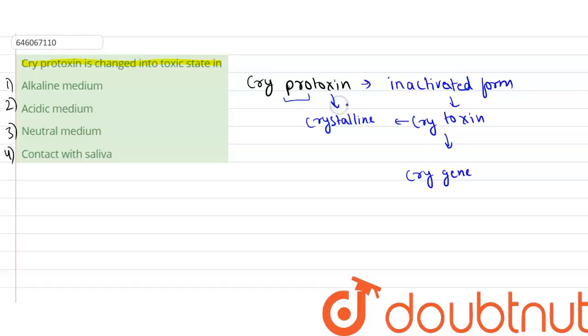Cry protoxin is a crystalline toxin. Whenever this crystal dissolves, it is converted into an active form. When the crystal of protoxin is dissolved, it is converted into cry toxin—the activated form.